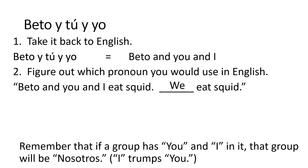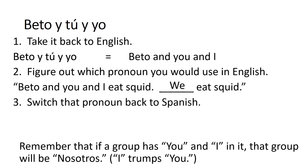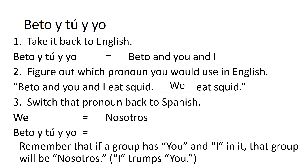In other words, the 'I' is more important than the 'you.' But just remember, if a group has 'I' in it, even if it's got 'you' in it, you can still use 'we' — nosotros. 'We' in Spanish would be nosotros. Therefore, if you got a group Beto y tú y yo doing a verb, you're going to conjugate the verb with the nosotros form.